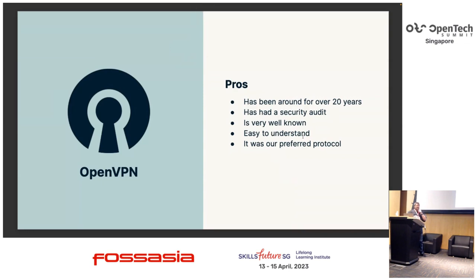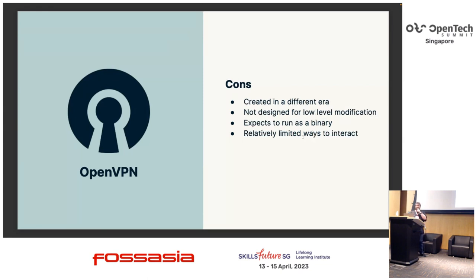OpenVPN has a lot of pros — it's been around for a very long time, it's been audited, it's well known, people recognize the name, and for the longest time it was our preferred protocol. The challenge though is OpenVPN was really created in a different era. It was designed for the days when your PC would be a box on a desk with a cable going to it, and that was pretty much as complicated as your networking environment got. Speeds were much slower then and the demands on a VPN were significantly less.